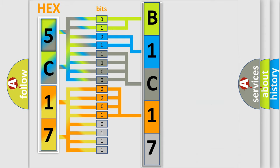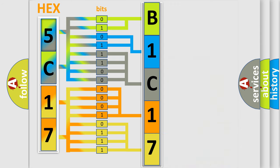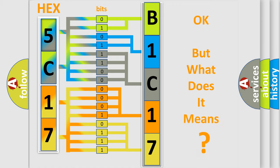A single byte conceals 256 possible combinations. We now know in what way the diagnostic tool translates the received information into a more comprehensible format. The number itself does not make sense to us if we cannot assign information about what it actually expresses.